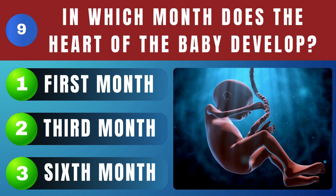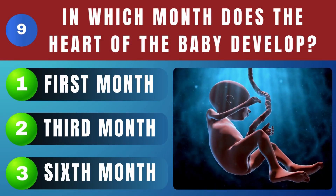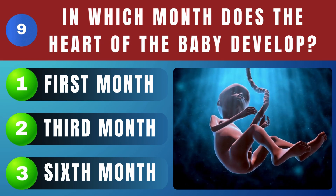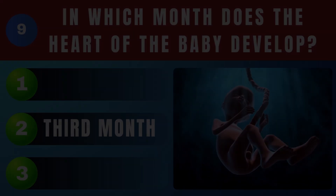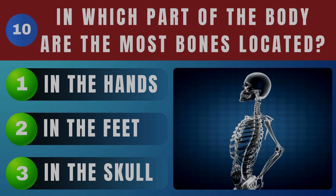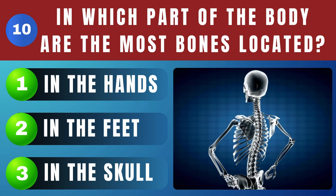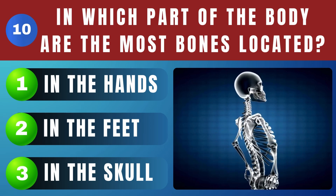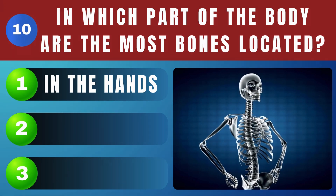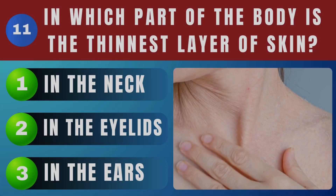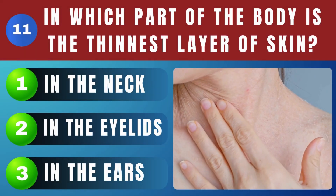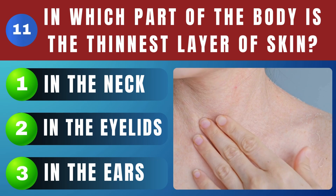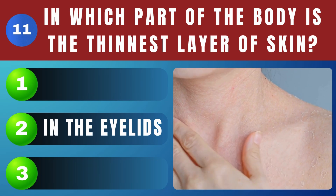In which month does the heart of the baby develop? The third month. In which part of the body are the most bones located? In the hands. In which part of the body is the thinnest layer of skin? In the eyelids.